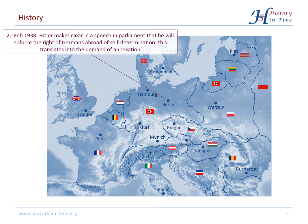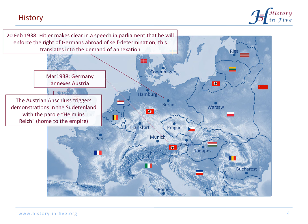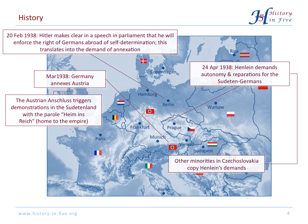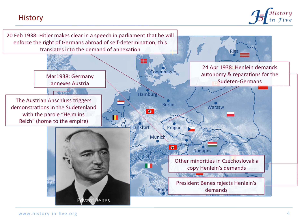The first country he annexed was Austria. This Austrian Anschluss triggered demonstrations in the Sudetenland — their slogan was 'home to the empire.' Henlein demanded from the government in Prague autonomy and reparations. The other minorities in Czechoslovakia copied him, but President Beneš rejected all of these demands.